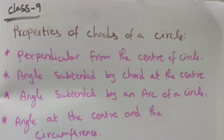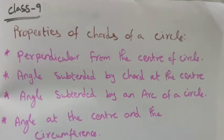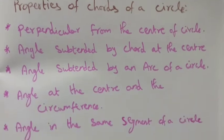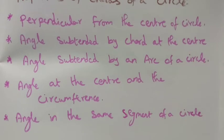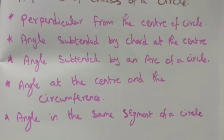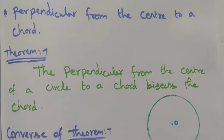Hi students, Class 9, Chapter 4 in Geometry. We are going to see the Properties of Chords of a Circle. In this topic we are going to see five sub-topics: perpendicular from the center of the circle, angle subtended by a chord at the center, angle subtended by an arc of a circle, angle at the center and the circumference, and angle in the same segment of the circle.